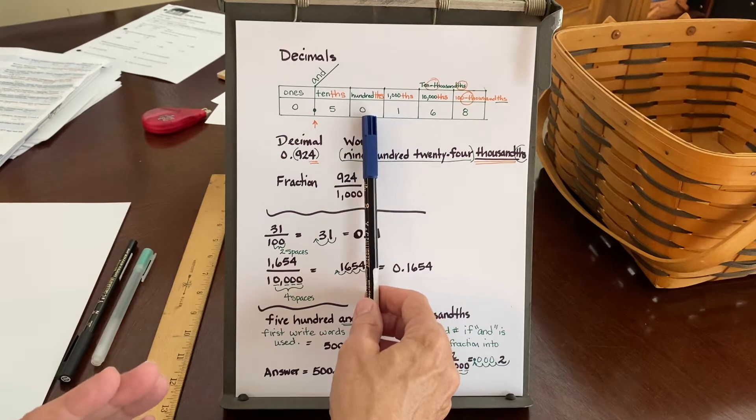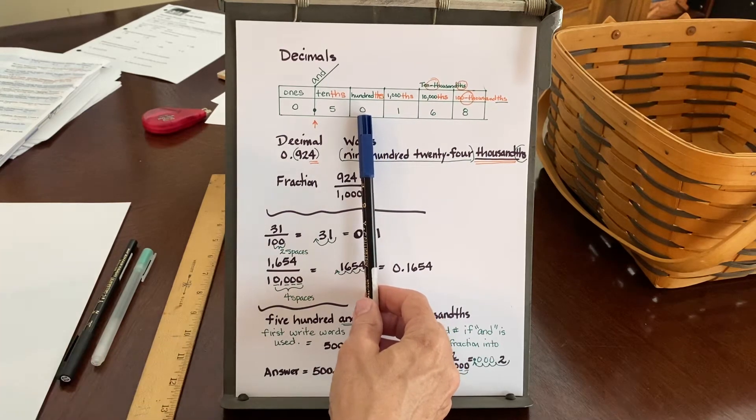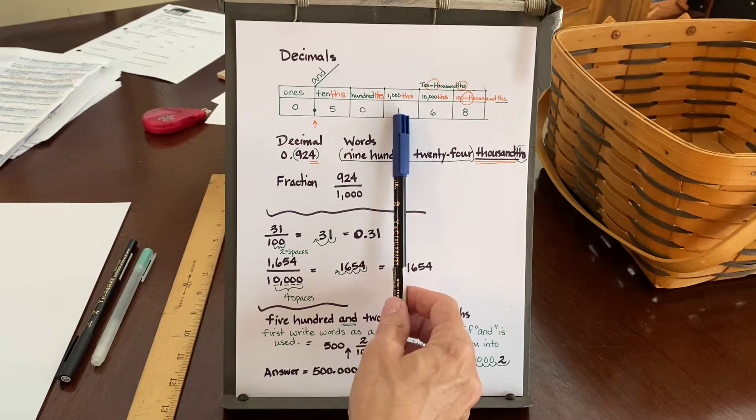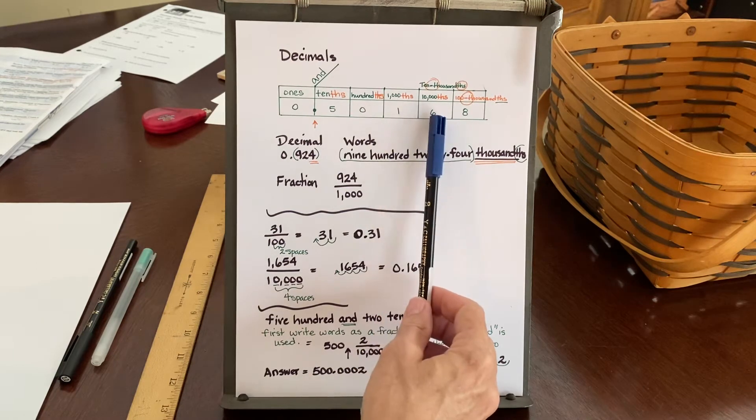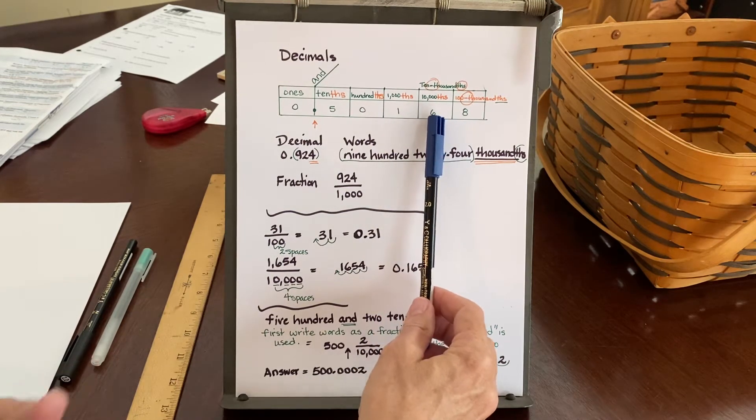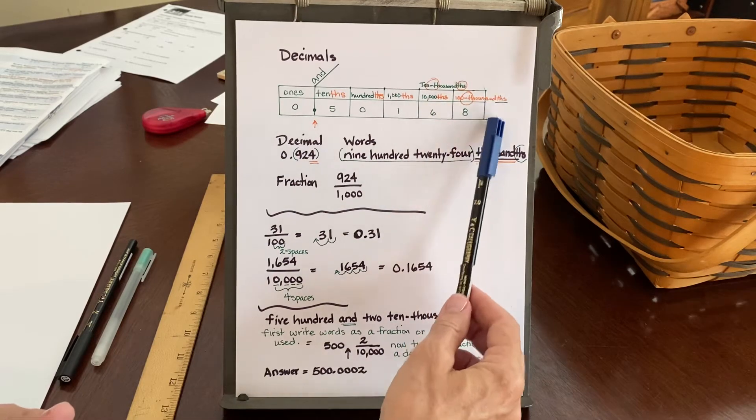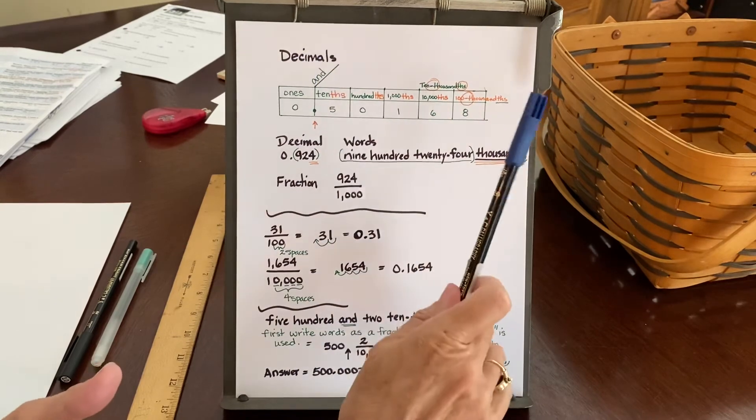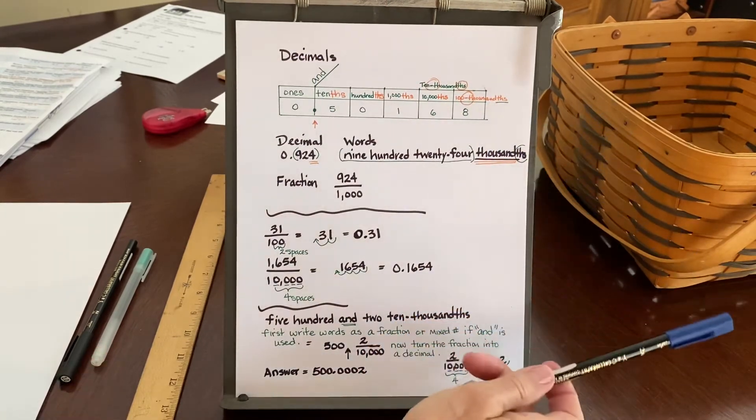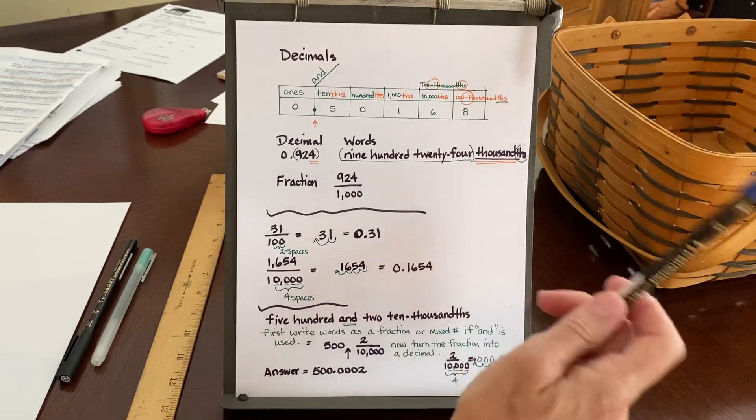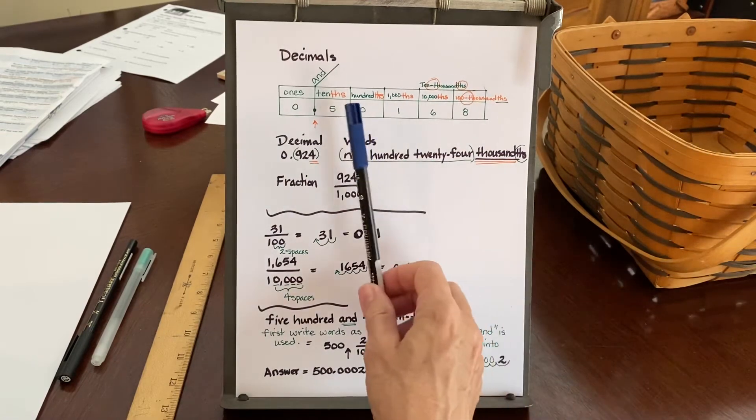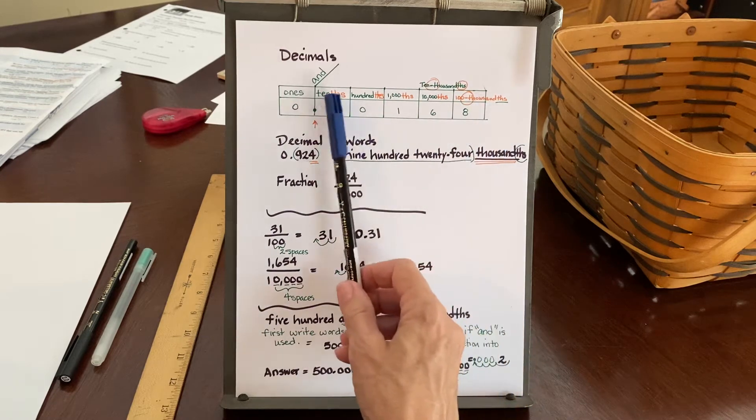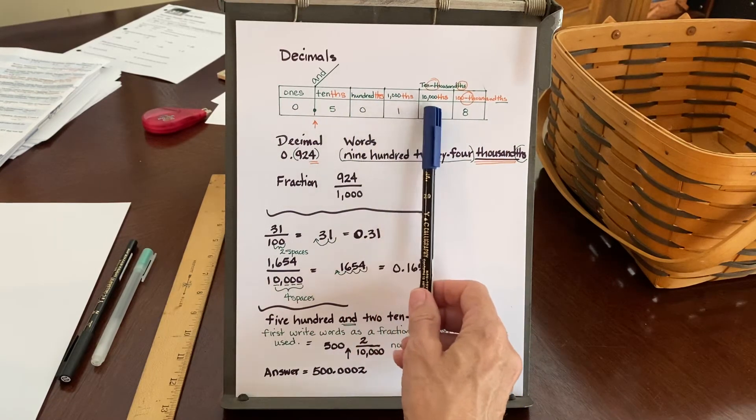Well, beyond the hundredths column, then it's going to count just like they did going to the left. Now we've got the thousandths with the THS on the end. The ten thousandths with the THS. The hundred thousandths with the THS. And then the millions and the ten millions and the hundred millions and then the billions and so on. But the only way that you know that we are behind the decimal is the THS that is on the end of the word.